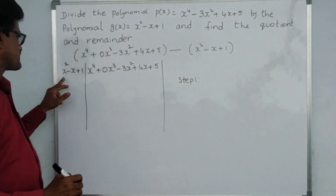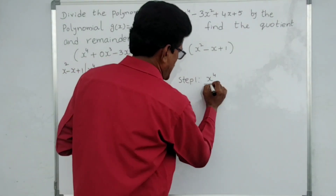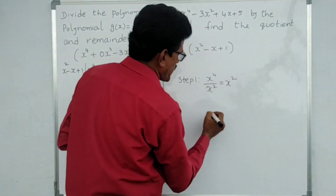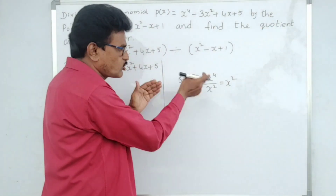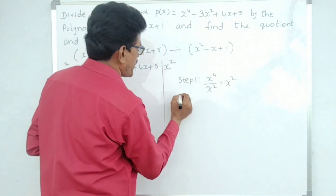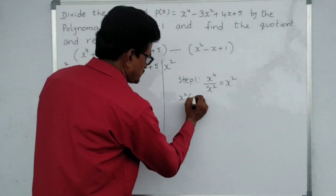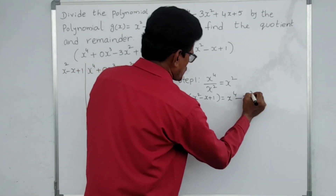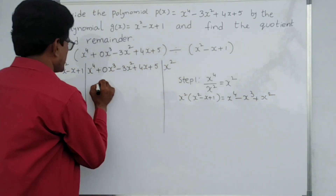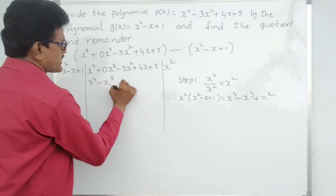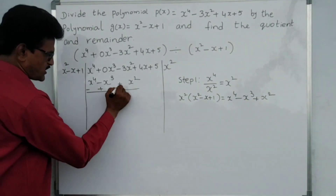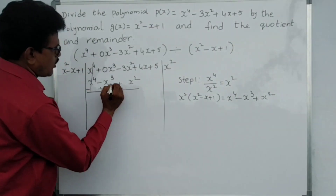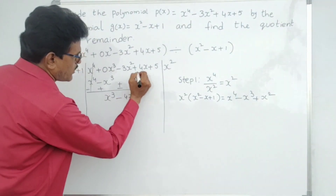Step one: first term by first term. x⁴ divided by x² — using the formula x^(m-n), that is x^(4-2) — we get x². Write x² here. Now x² into (x² minus x plus 1): x² times x² is x⁴, minus x times x² is minus x³, plus 1 times x² is x². Write x⁴ minus x³ plus x². Do subtraction — change symbols minus, plus, minus — first term cancels, giving plus x³, then minus 3x² minus x² gives minus 4x². Bring down plus 4x.